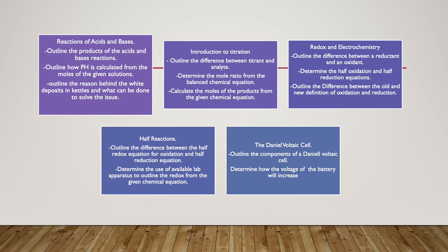On Tuesday we will be starting with redox and electrochemistry. In that class we will be able to outline the difference between an oxidant and a reductant. We will be able to determine the half oxidation and half reduction equations, and finally we will be able to outline the difference between the old and new definition of oxidation and reduction.